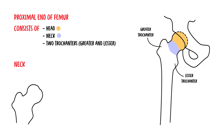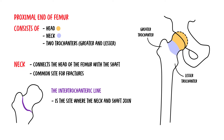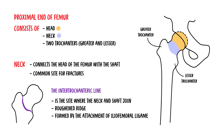The neck of the femur connects the head of the femur with the shaft and is a common site for fractures. The intratrochanteric line is the site where the neck and the shaft join — it is a roughened ridge formed by the detachment of a powerful ligament, the iliofemoral ligament.